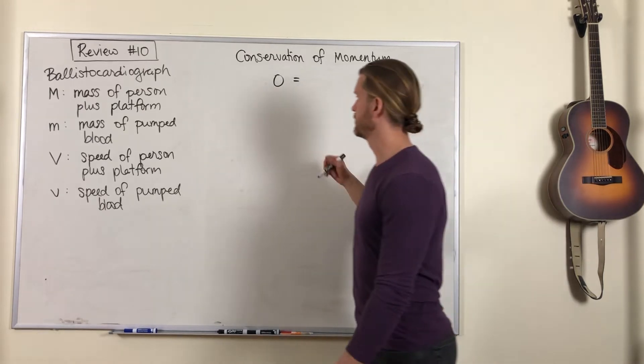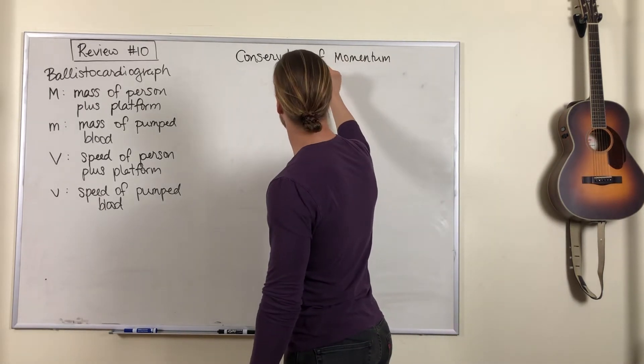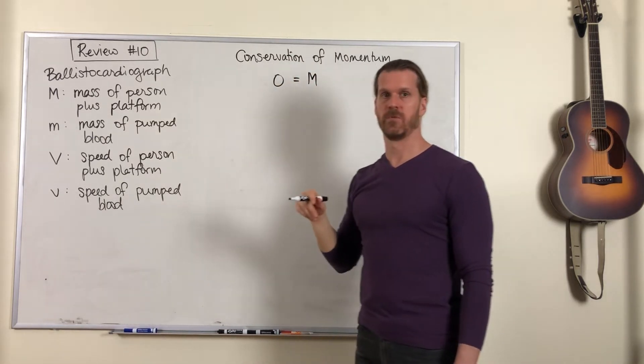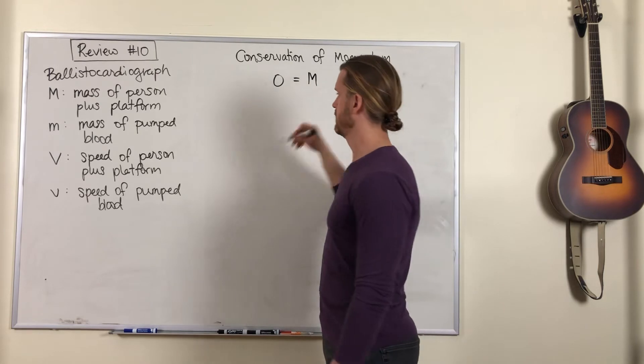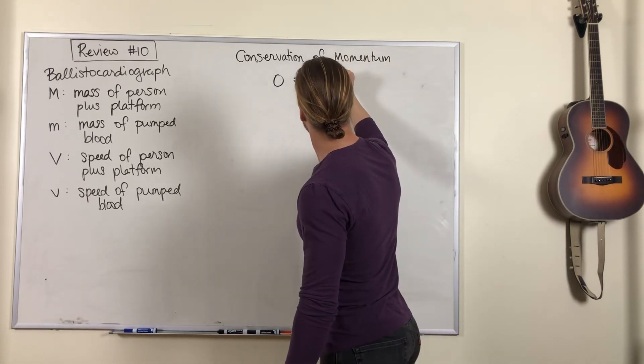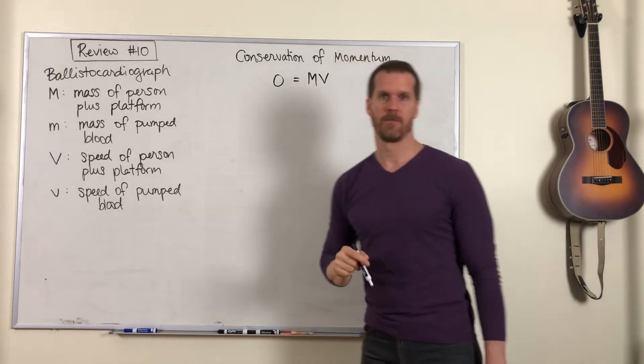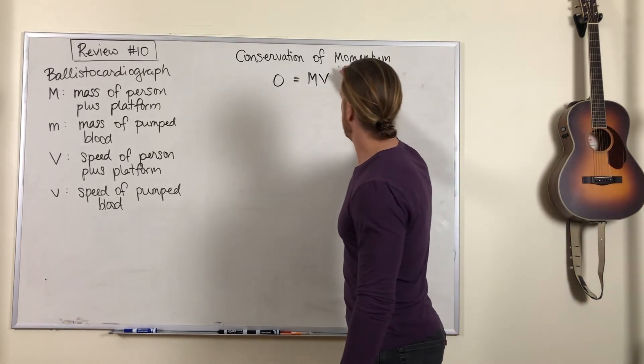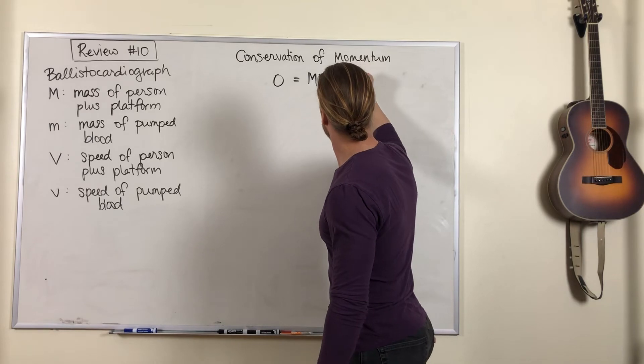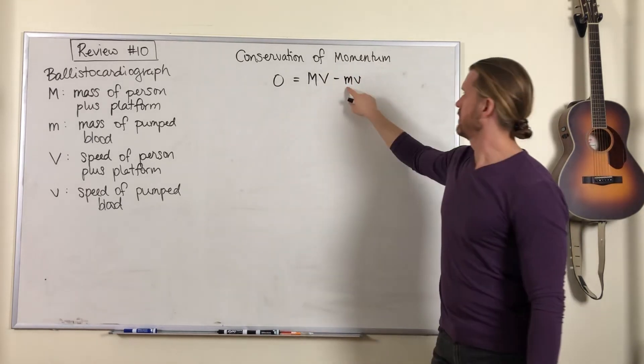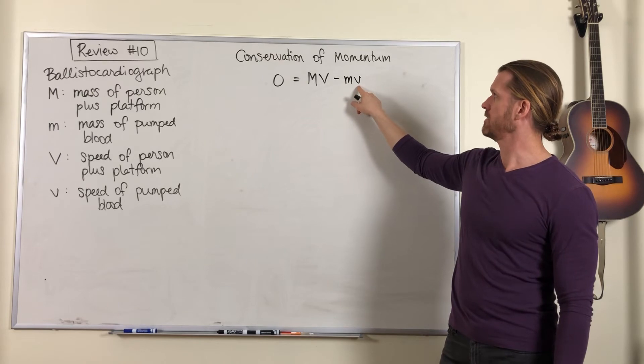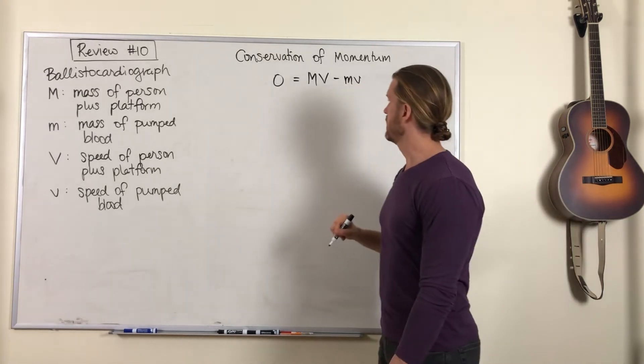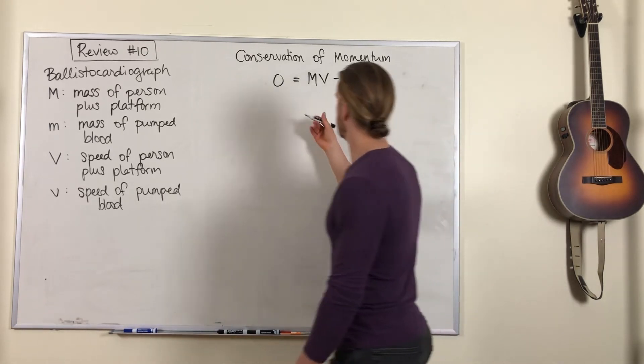Now, after a heartbeat, you now have the person and the platform moving one direction with speed capital V. Let's just call that the positive direction. It doesn't really matter. And then the blood is moving with speed of little v in the opposite direction. So little m is the mass of the blood, and we just have a tiny bit of algebra here to do it.